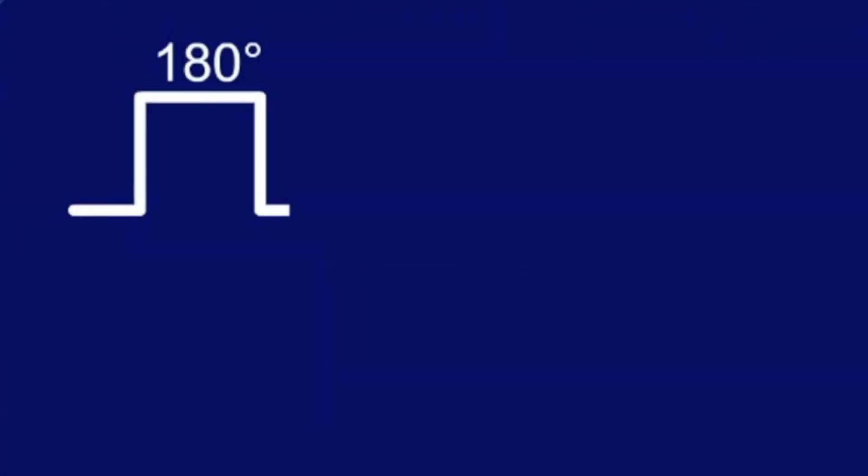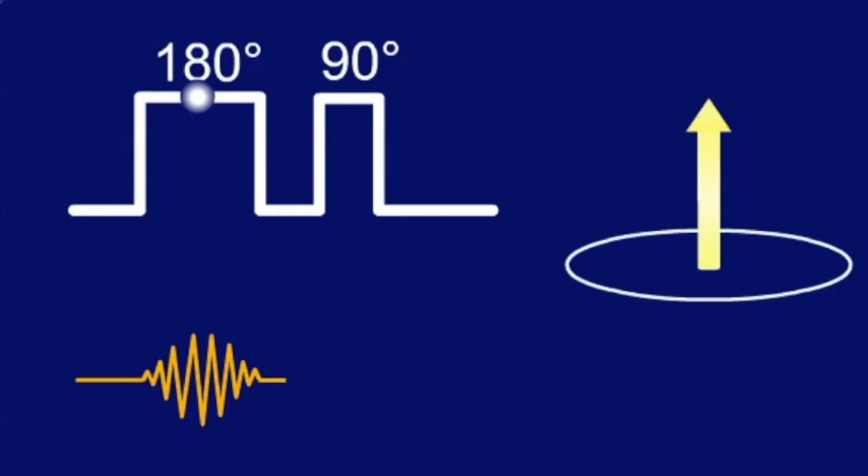In contrast to the spin echo sequence, the inversion recovery sequence uses first a 180-degree pulse which is then followed by a 90-degree pulse. The 180-degree pulse turns the longitudinal magnetization in the opposite direction. All protons that were responsible for the net magnetic moment pointing up now point down.